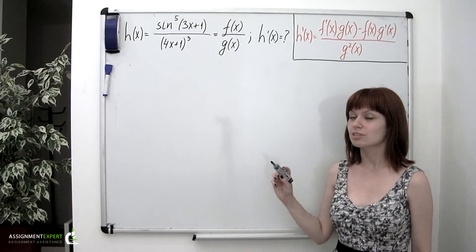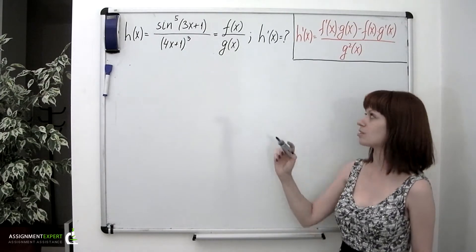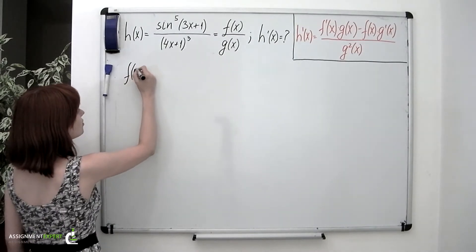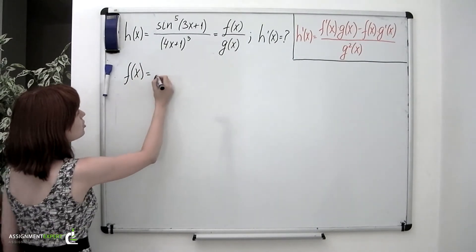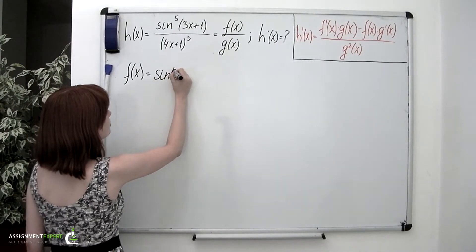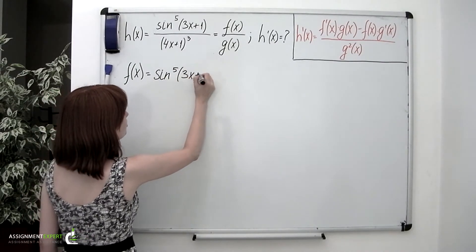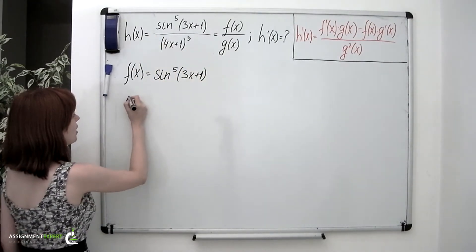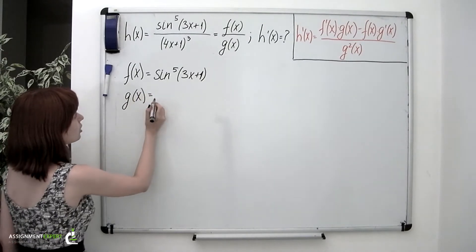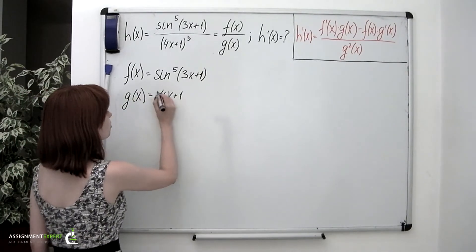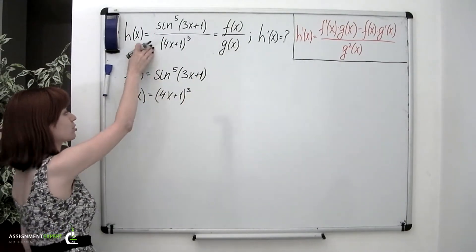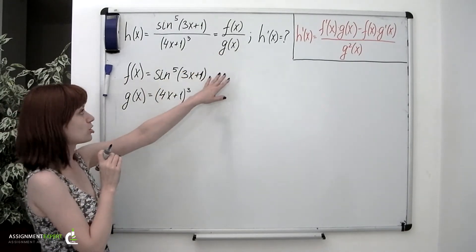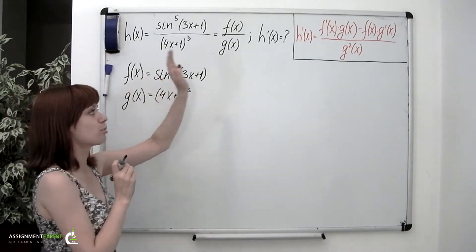This given function may be represented as a ratio of two functions, f and g. Our f of x function will be equal to sine to the fifth of 3x plus 1, which is the expression in the top. And g of x will be equal to 4x plus 1 to the third, which is in the bottom. Since we've represented this function as a ratio of two functions, its derivative should be found using the quotient rule.